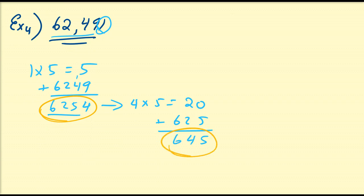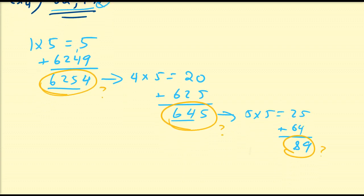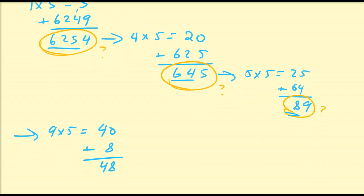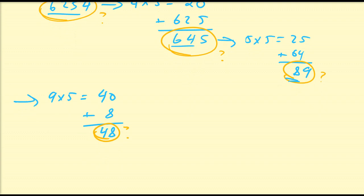Is 645 divisible by 7? Let's continue. 5 times 5 is 25; add to it 64 — 5 plus 4 is 9, 6 plus 2 is 8 — so we get 89. Is 89 divisible by 7? Let's continue. The last digit is 9, and 9 times 5 is equal to 45. Add to it its remaining digit, giving us 45 plus 8 equals 53. Wait — let's assume you don't know. Continuing: is 48 divisible by 7?